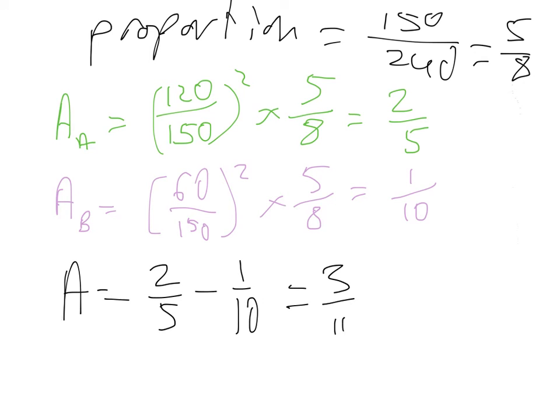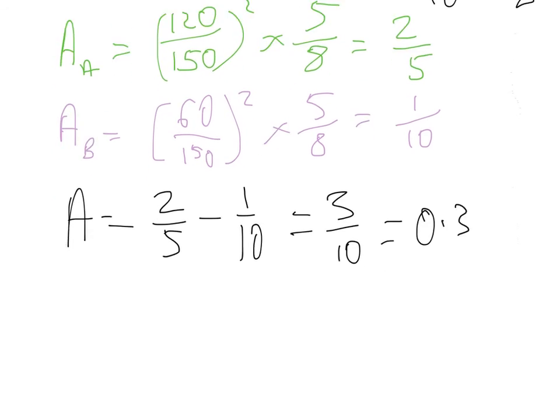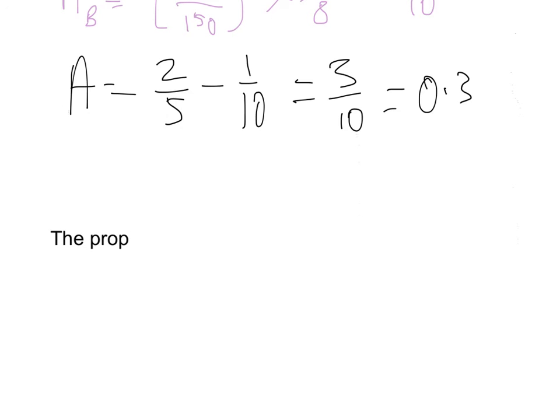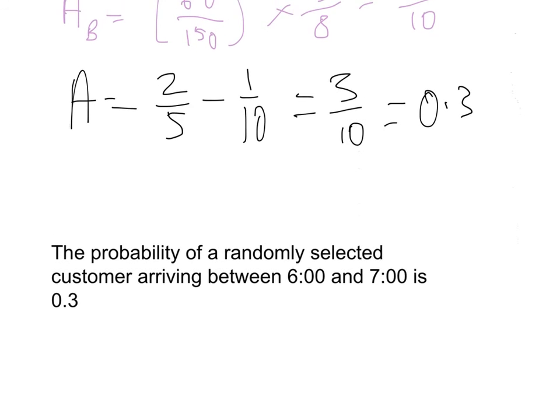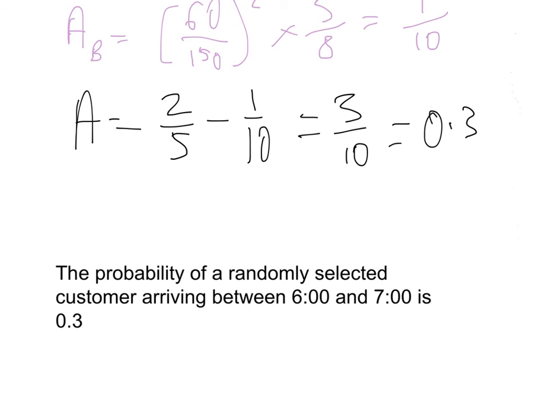which equals 3 tenths or 0.3. So that leads us to the same thing. The probability of a randomly selected customer arriving between 6 o'clock and 7 o'clock is 0.3. So two solutions to the same problem, both using similar methods but not exactly the same, and both coming out with the same answer, which is what we wanted. Hopefully this helps with triangular distribution. We'll see you next time for more information. Thank you.